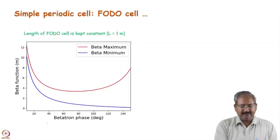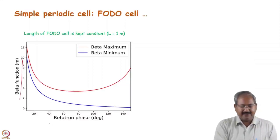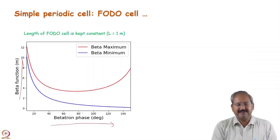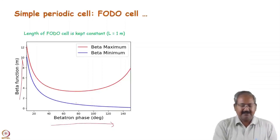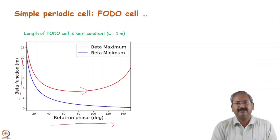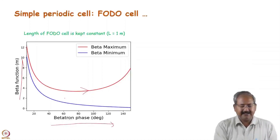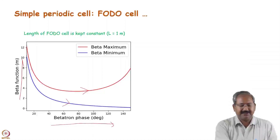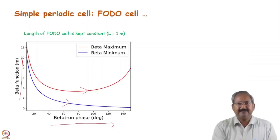Here we are making the same beta function as a function of betatron phase. If we are changing the betatron phase, how the beta function's maximum value changes in the photocell, and this is the minimum value of the beta function which occurs at the symmetry point — how it changes with the variation in betatron phase.